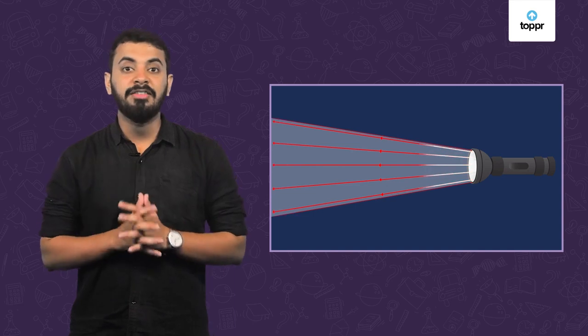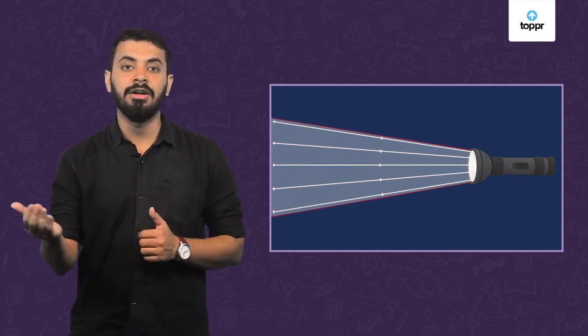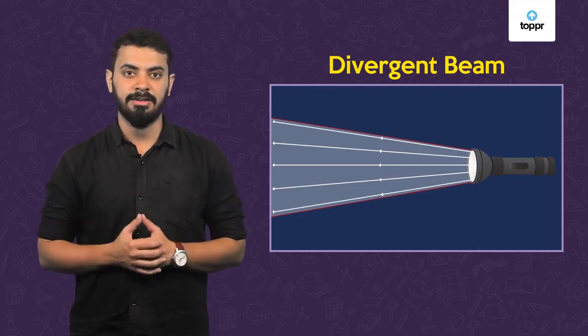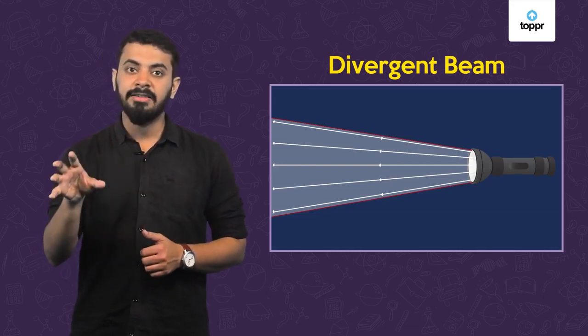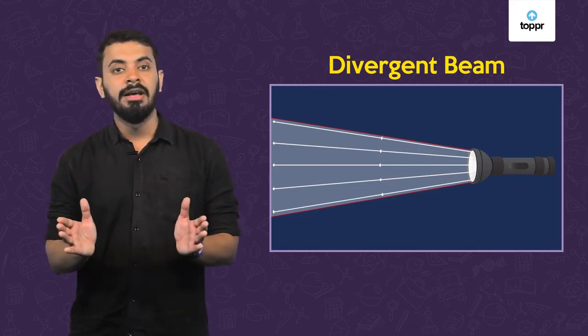Such a beam that spreads outwards as it travels is called a divergent beam of light. As these rays are moving away from each other, they never meet.